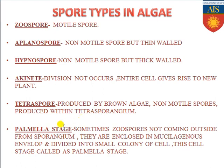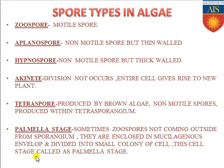There is another stage called palmella stage. Sometimes the zoospore, a motile spore, does not come outside from the sporangium. They are enclosed in a mucilaginous envelope and divide into a small colony of cells — this cell stage is called the palmella stage. So zoospores that do not exit the sporangium are enclosed in a mucilaginous envelope, forming a small colony of cells known as the palmella stage.